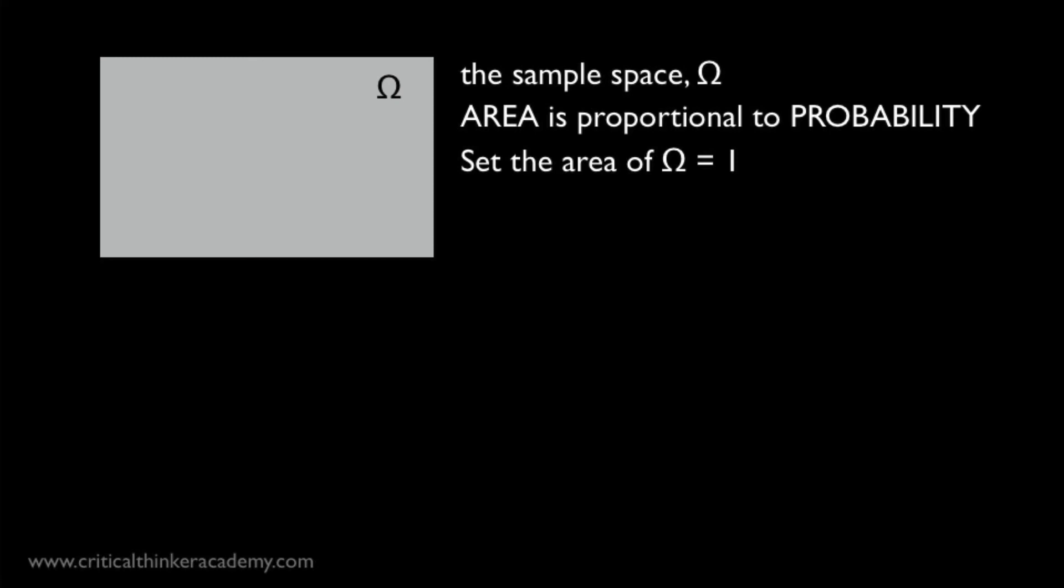First let's set up a convention that is often used to graphically represent probability relations. I find it really helps to develop your intuition about these relationships. This only works for certain kinds of sample spaces, but it's still very helpful. Let's represent the total sample space, the complete set of possible elementary outcomes by a square. We'll call it omega.